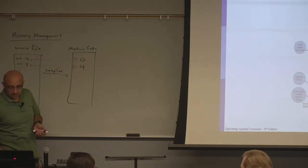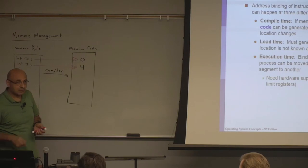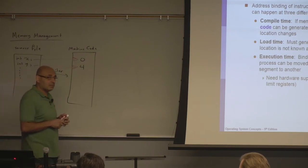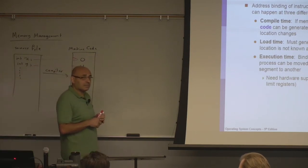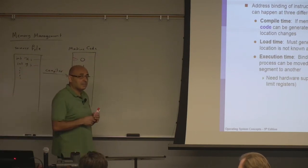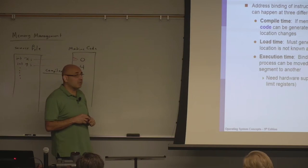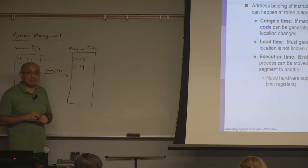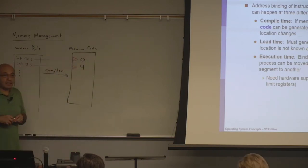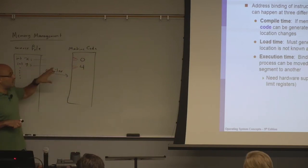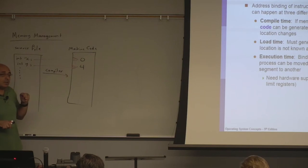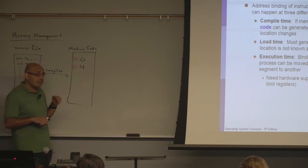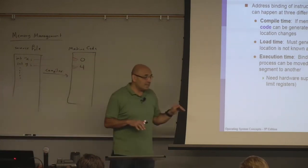Regarding the base address: it is for the whole program, not a particular variable. So all the addresses in the relocatable code are relative addresses relative to a certain base. That base may be determined at load time — load-time binding — or at execution time, where the operating system may assign a base address initially and then change it.